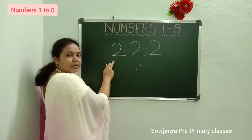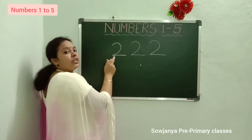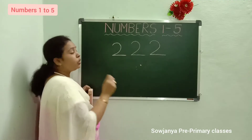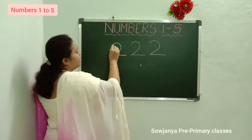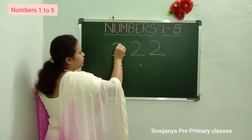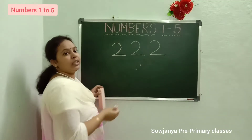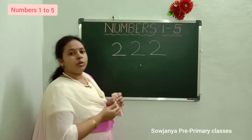What is the next number children? 2. What is the next number? How to write 2? Left curve, sleeping line. 2.